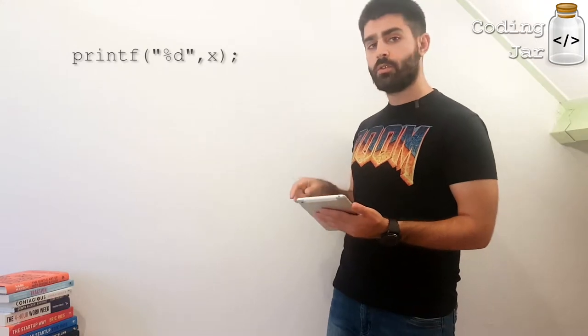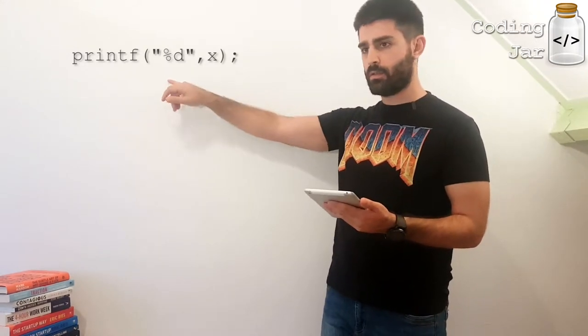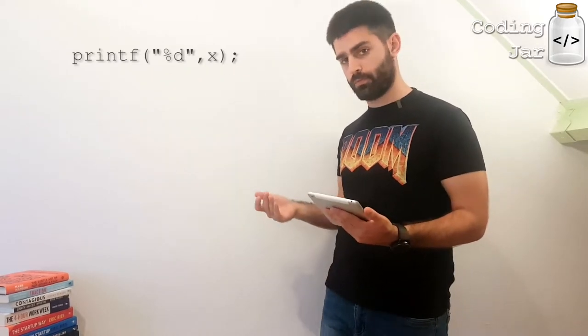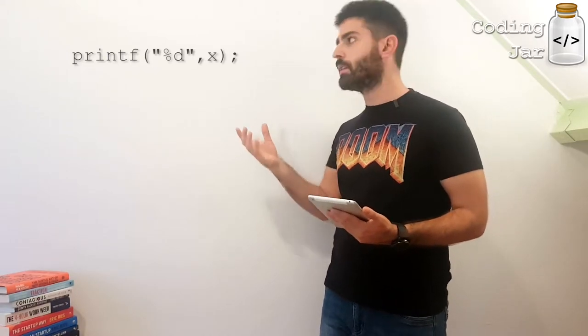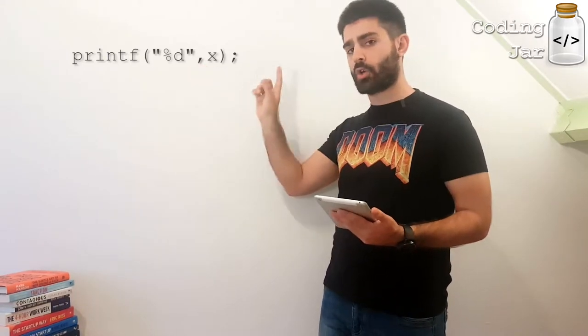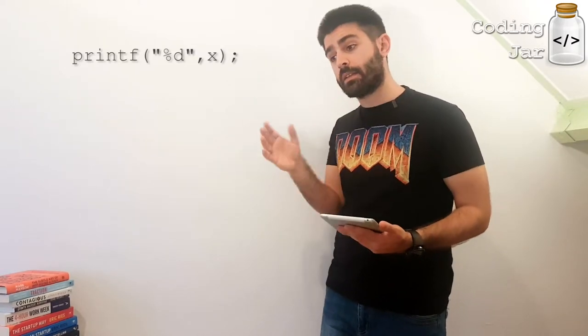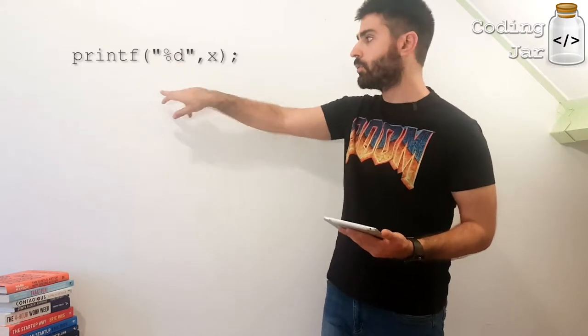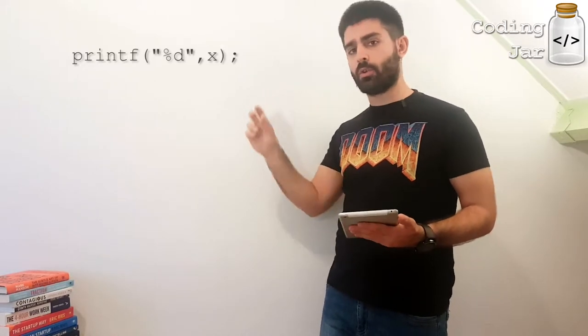So the first thing I want you to think about is the following. Yeah, printf is a function, yes? The first argument is the text we want to output. And in the place where we want a variable to be printed, we put a placeholder, a flag, something that printf understands that something, a variable will be there. And then we declare the variable outside the double quotation marks.